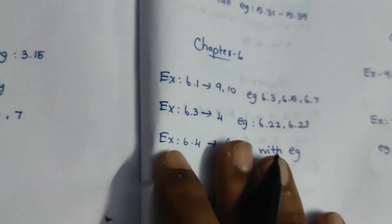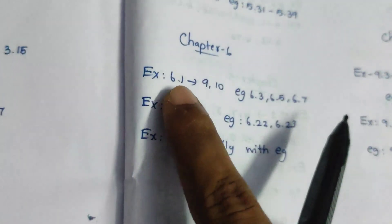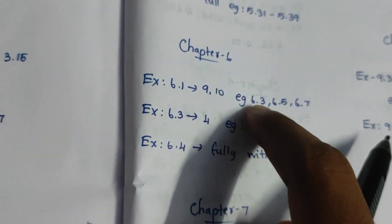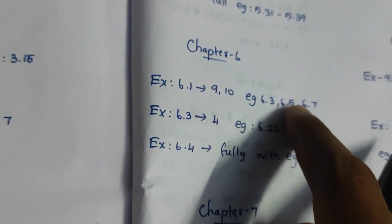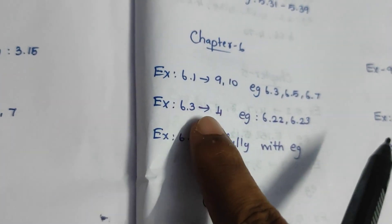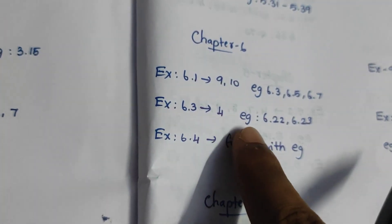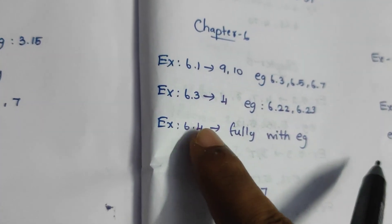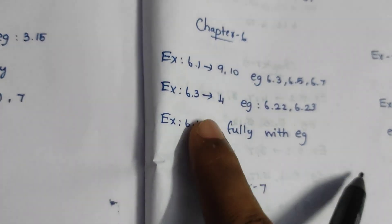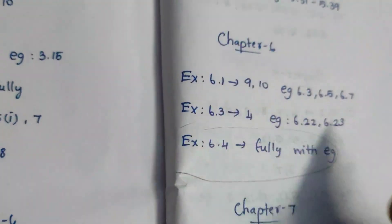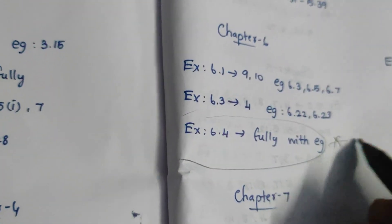It's not too long, because I have been told it is very important. Then we will check the next class. The class is 6.1 — a 5th sum. Then the exam is 6.3, 5, 7. Exercise 6.3, 4th sum. Exercise 6.4, fully with the example. If you have a 5-mark question, you can start with the example.